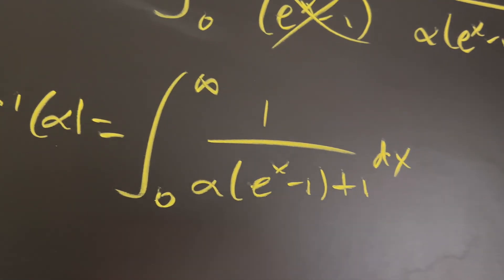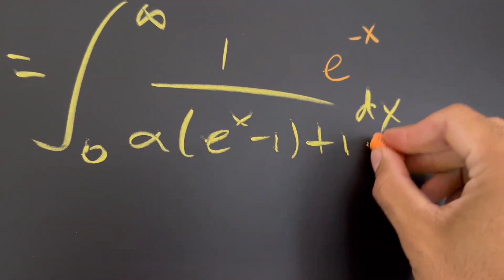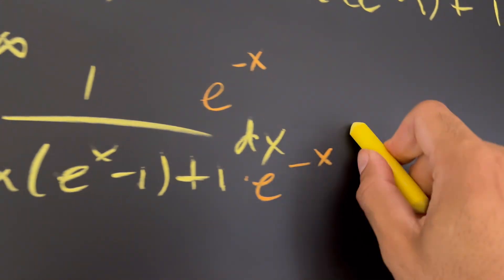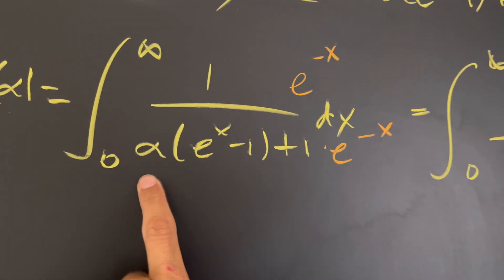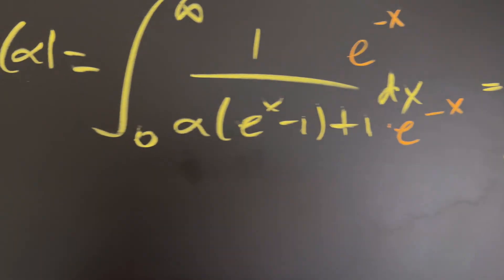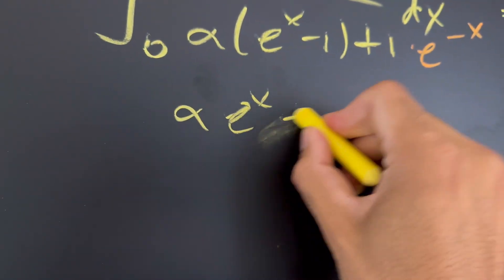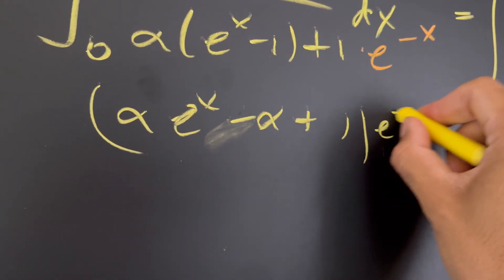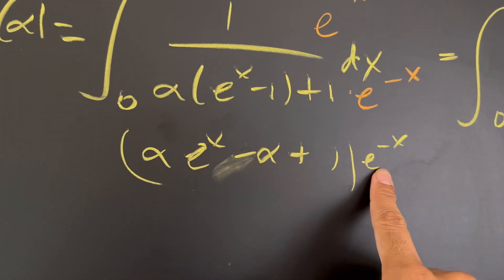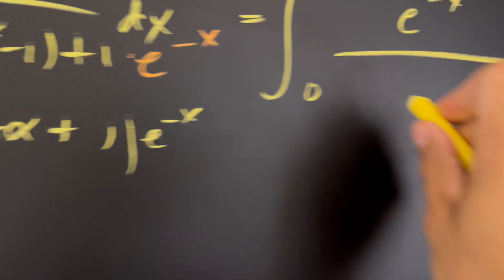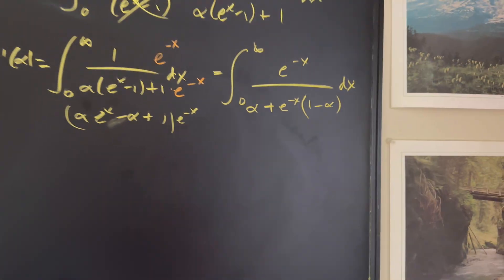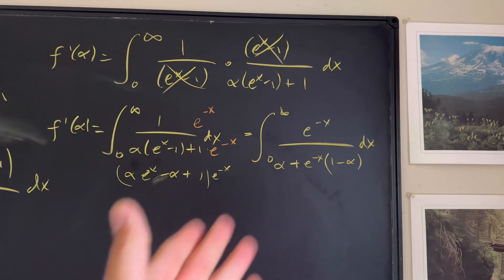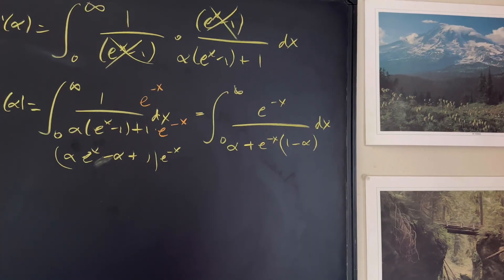I'm going to multiply everything by e^(−x). That gives us the integral from zero to infinity of e^(−x) over α·e^x minus one, times e^(−x), with respect to x. Distributing, the denominator becomes α·e^x minus α plus one. When we distribute e^(−x) to e^x, that becomes one, so we get α plus e^(−x) times (one minus α), which I'll rewrite as (one minus α) on the bottom.